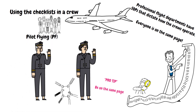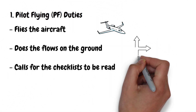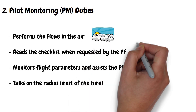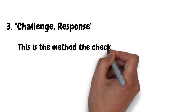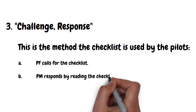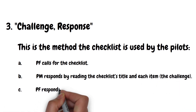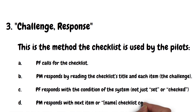In a two-pilot crew, you've got the pilot flying and the pilot monitoring. There are three critical points for using checklists with CRM in general aviation: the pilot flying duties, the pilot monitoring duties, and the challenge-response method. The pilot flying flies the airplane, does the flows on the ground, and calls for the checklists to be read. The pilot monitoring performs the flows in the air, reads the checklist when requested by the pilot flying, and assists with monitoring the flight and systems. The challenge-response method is how the pilots read the checklist: the pilot flying calls for the checklist, then the pilot monitoring reads the title and each item as the challenge, then the pilot flying responds with the condition of the system — not just 'set' or 'checked' — and lastly the pilot monitoring responds with the next item or declares the checklist complete.